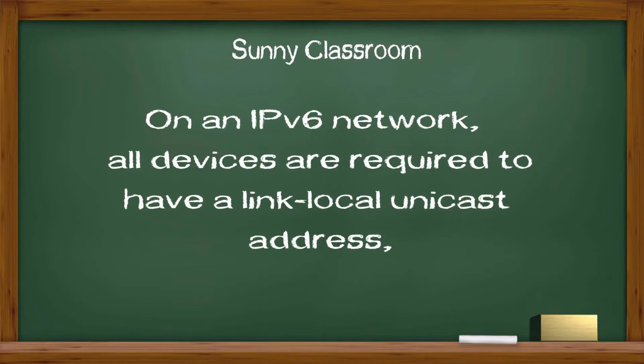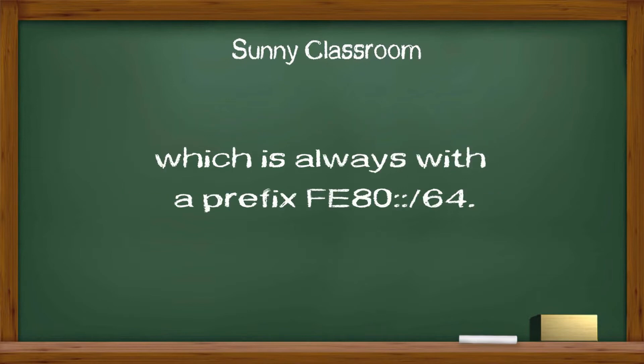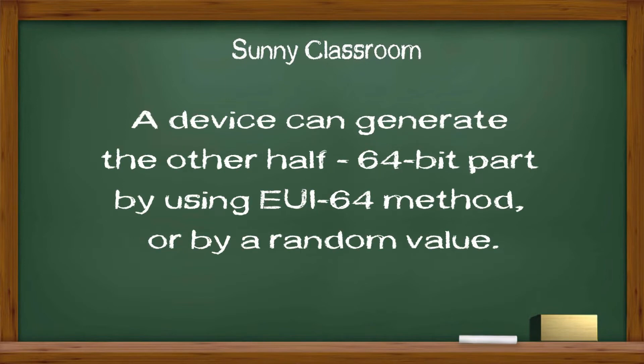On an IPv6 network, all devices are required to have a link-local unicast address, which is always with a prefix FE80::. A device can generate the other half 64-bit part by using the EUI64 method or by a random value.